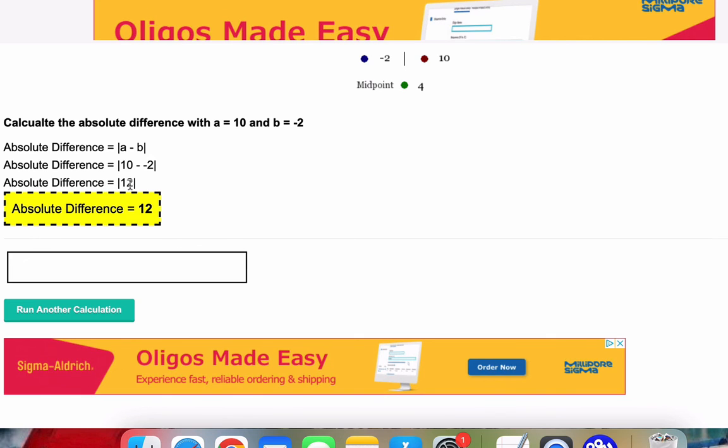And the absolute value of any number is positive, so we get 12. So that is it. Very simple formula. And again, I will post a link in the calculator or the comments so you can run different calculations. Thanks for watching.